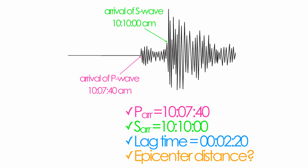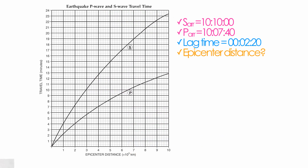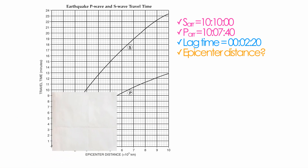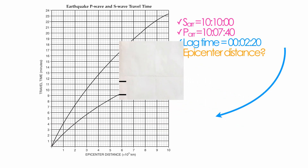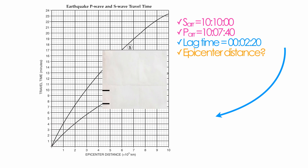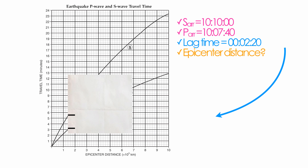Probably the most common type of question is your typical seismogram that gives you the arrival time of the P-Wave and arrival time of the S-Wave. Subtract the two arrival times to get your lag time. Once you determine your lag time, use the wedgie method: take a piece of paper, mark off your lag time on the vertical axis — for example, two minutes and twenty seconds — then slide that paper in between your P-Wave and S-Wave curve. Where the top mark touches the S-Wave and the bottom mark touches the P-Wave, you can determine your epicenter distance.